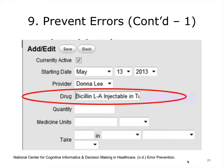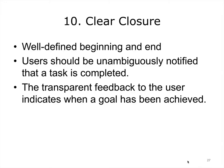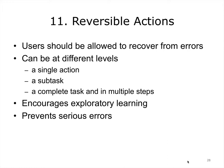Clear closure means that each task has a well-defined beginning and end. Users should be unambiguously notified that a task is completed. Each interactive transaction needs a beginning, middle, and end to accomplish the seven stages of actions proposed by Norman. Transparent feedback to the user indicates when a goal has been achieved. Reversible actions means that users should be allowed to recover from errors. These reversible actions can be at different levels — a single action, a subtask, or a complete task — and in multiple steps. Reversible actions also encourage exploratory learning and prevent serious errors.